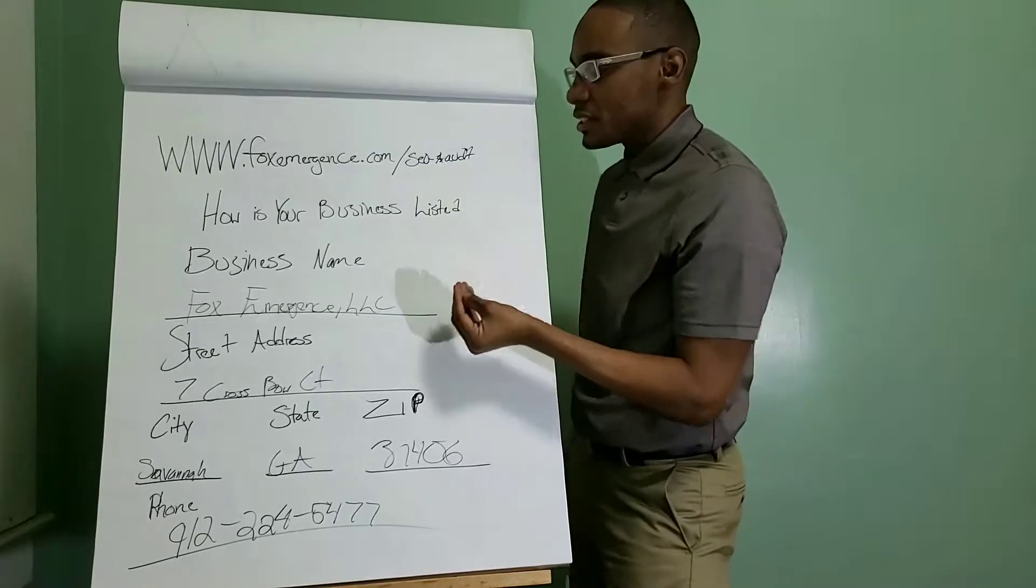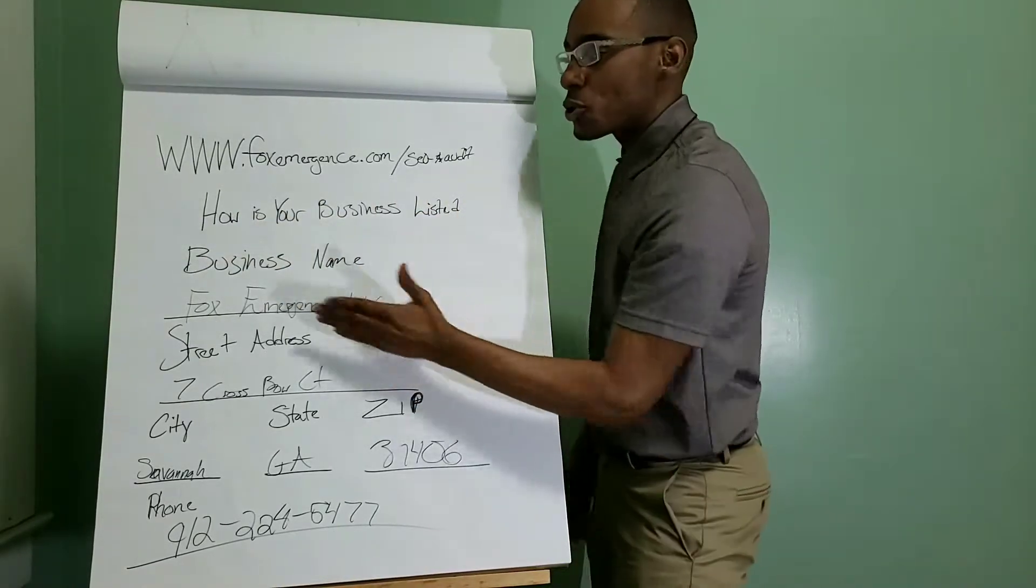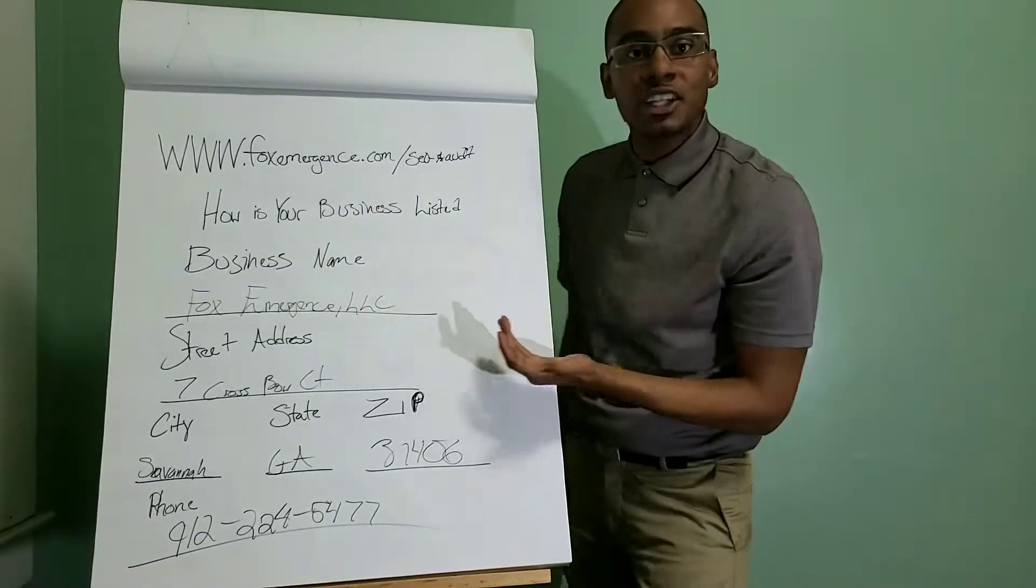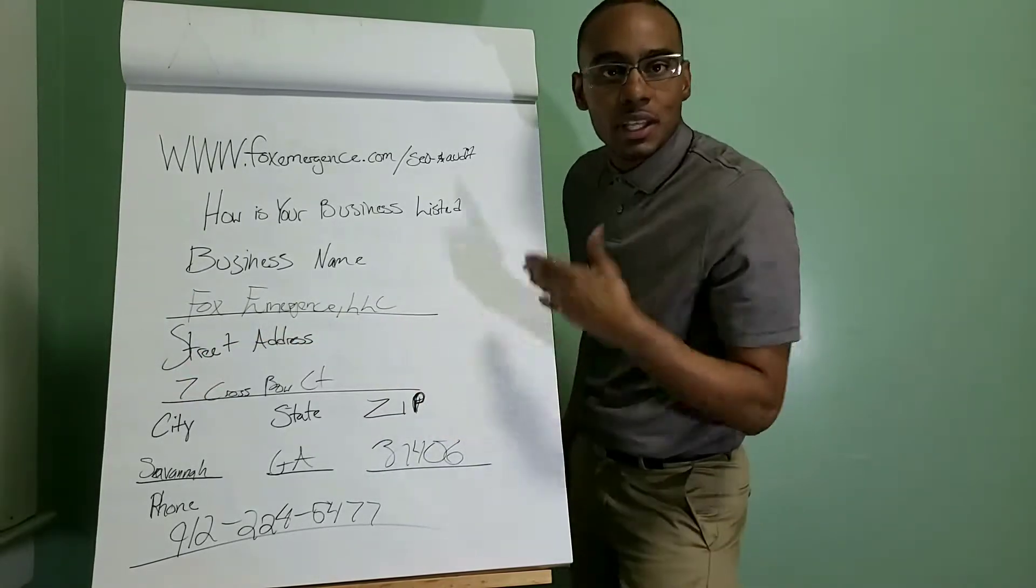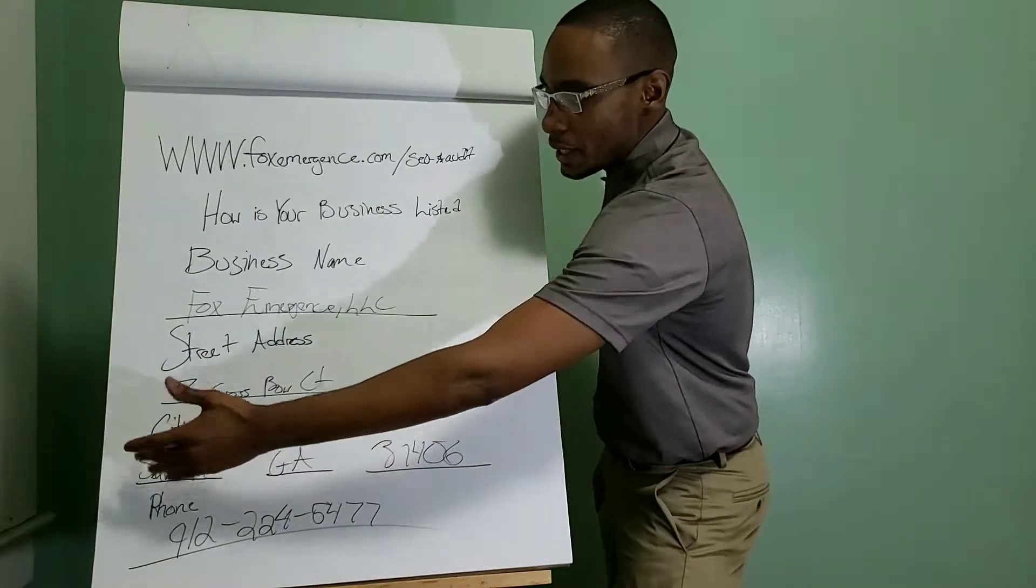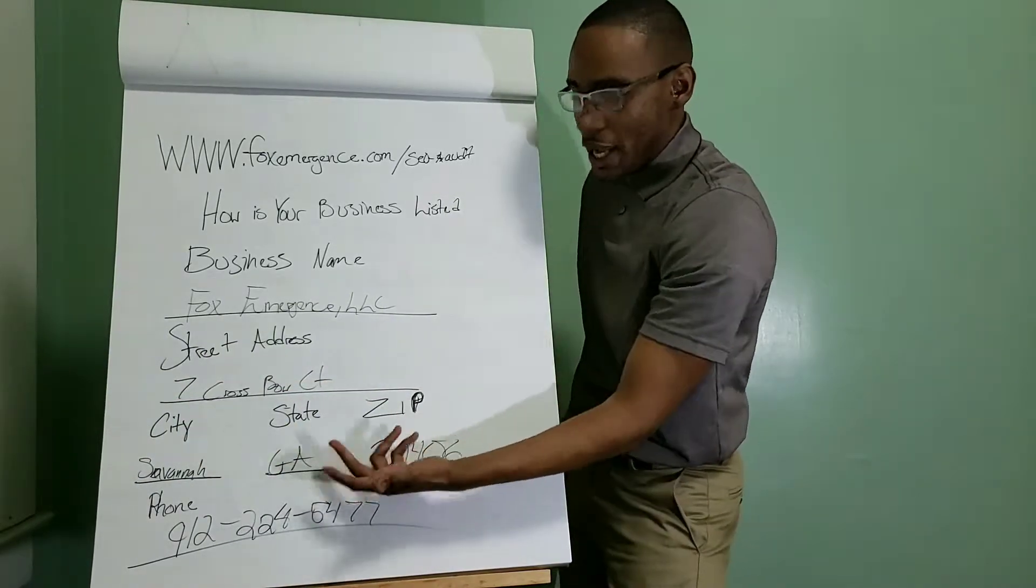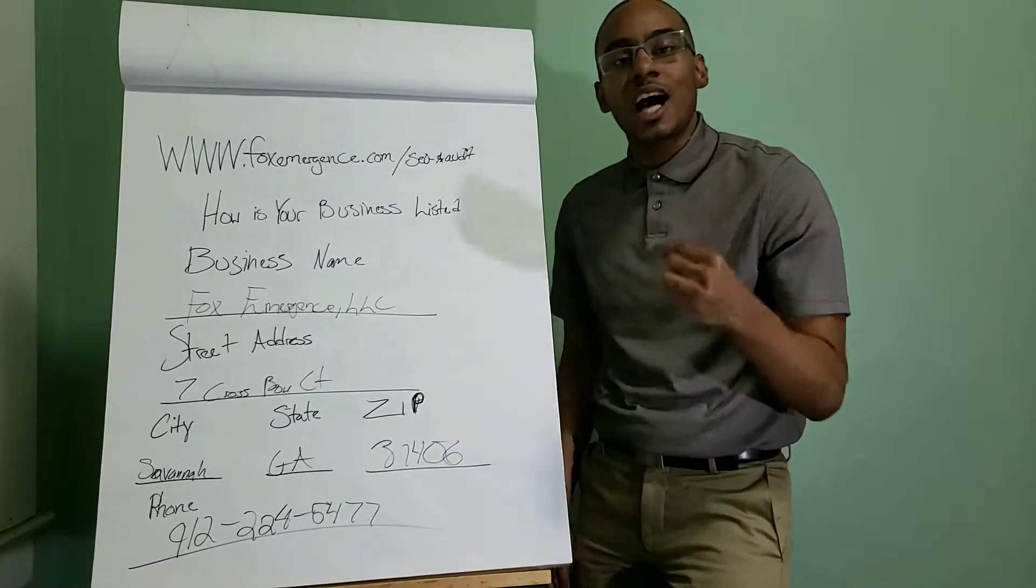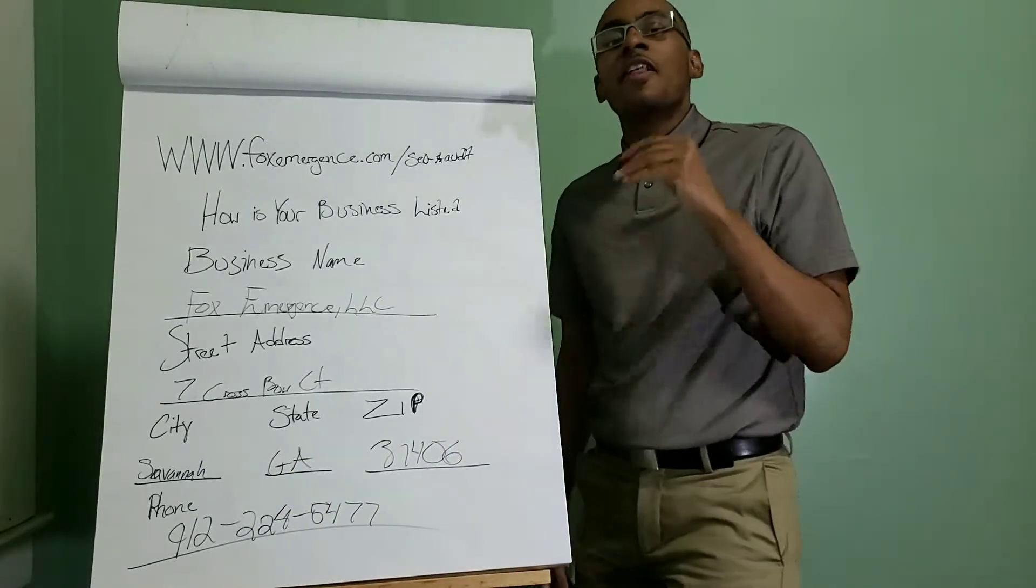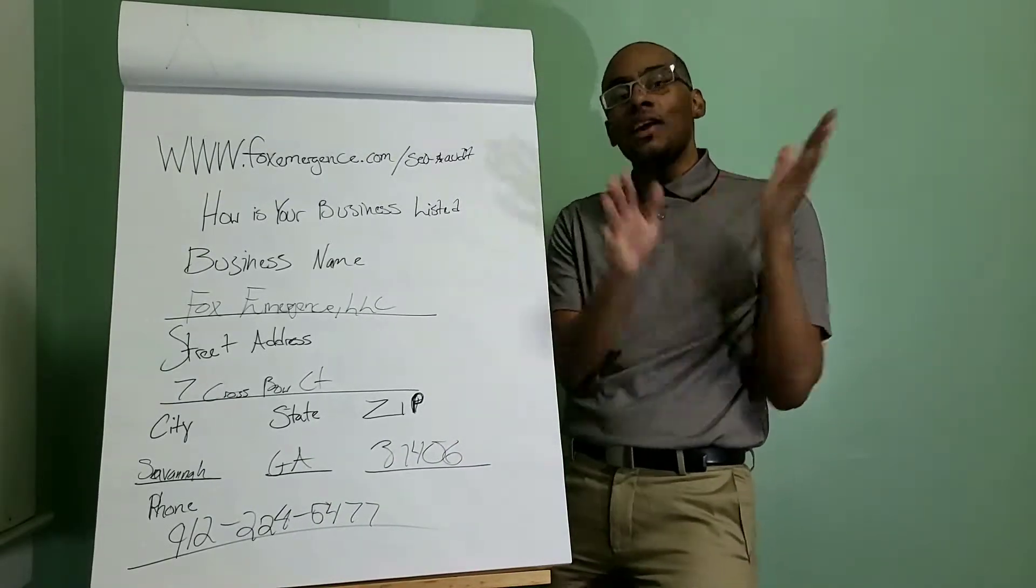How is your business listed? I want you to insert your business name. Mine is Fox Emergence, LLC. Your street address, 7 Cross Bowl Court. It's a home-based business. Then the city, Savannah, State, Georgia, zip code 31406, and the phone number. Mine is 912-224-5477.